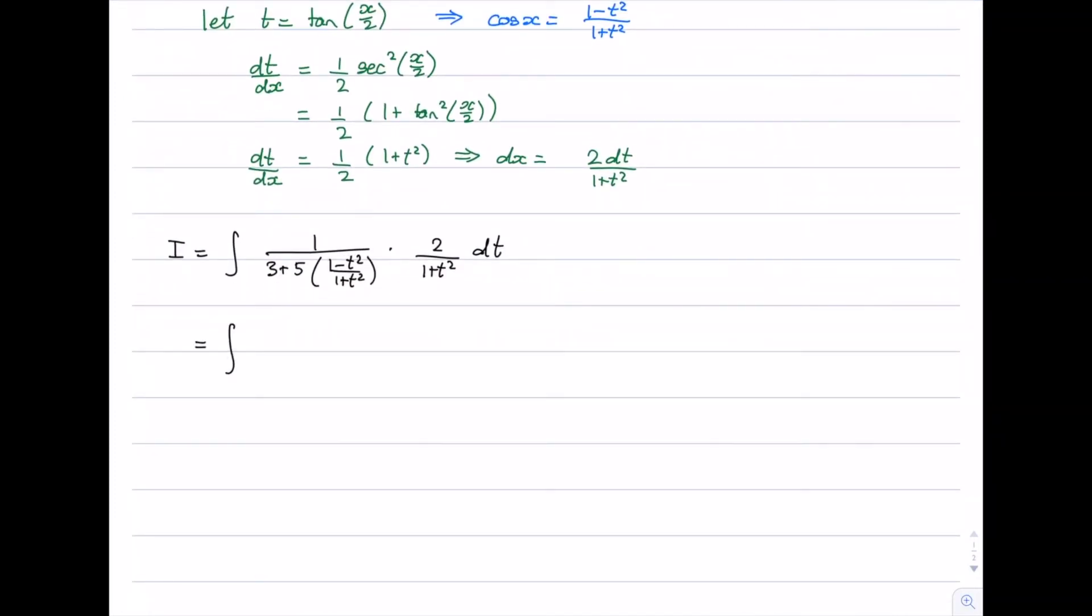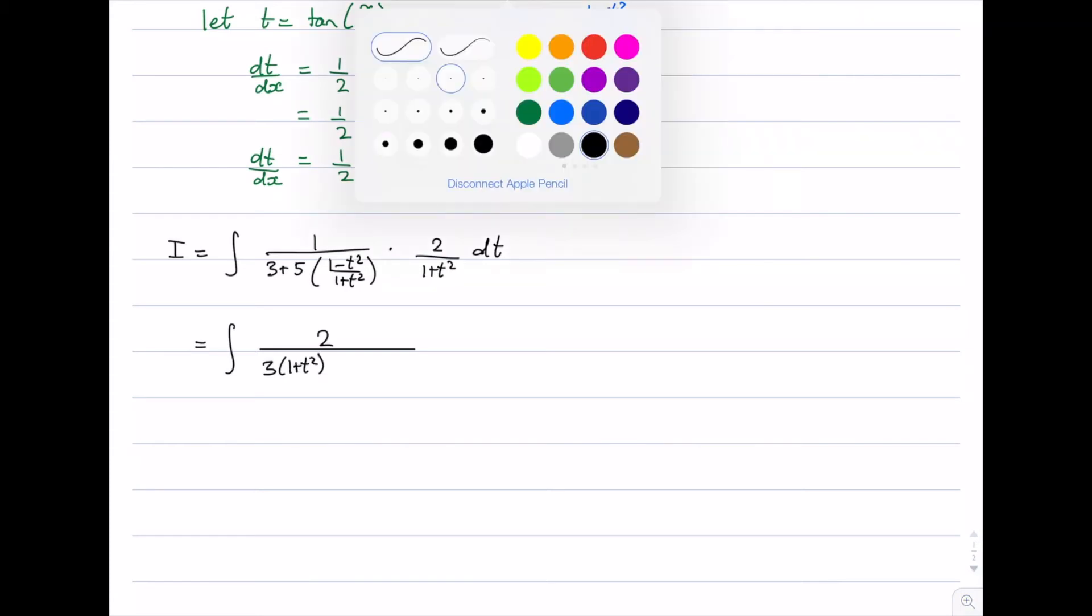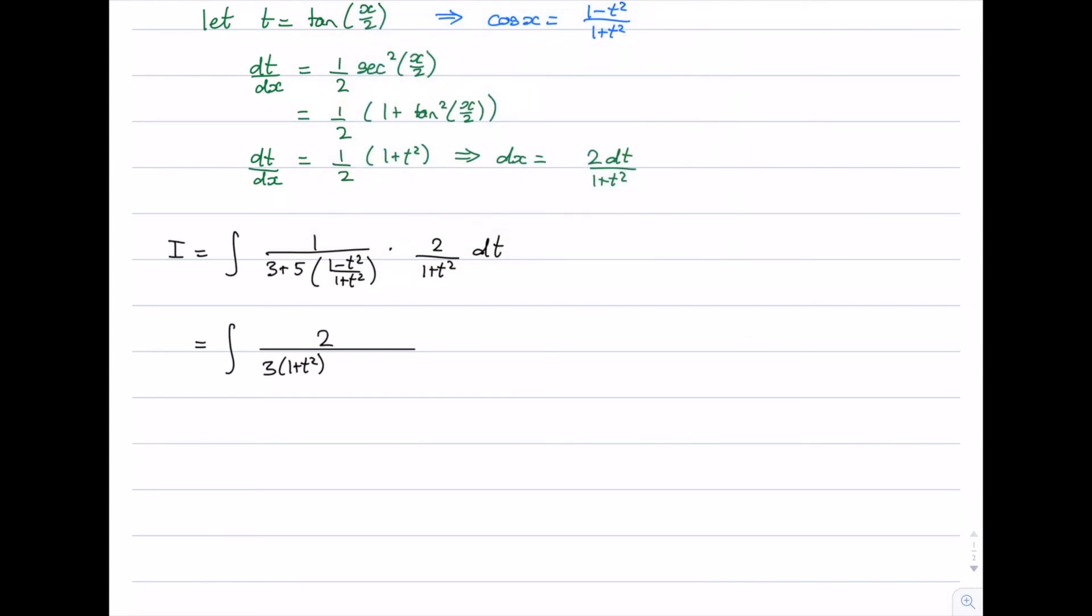So on the numerator we have 1 times 2 which is just going to be 2. In the denominator what do we have? We have 3 times 1 plus t squared. So we're distributing 1 plus t squared into both terms of the denominator. You'll see that this 1 plus t squared will cancel with that one when we multiply those two terms. So we're actually only just left with 5 into 1 minus t squared dt.